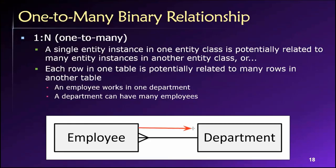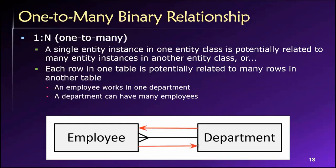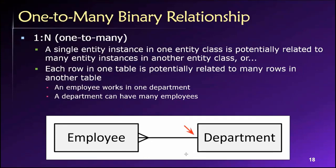If we read the same relationship in the opposite direction, from employee to department, we would say each employee belongs to or works in just one department. So we need to consider both directions to fully understand the relationship. In the direction from department to employee it's many — each department can have many employees. In the direction from employee to department it's one — each employee works in just one department.